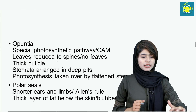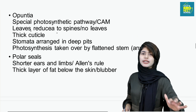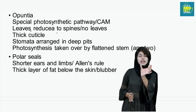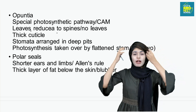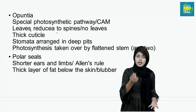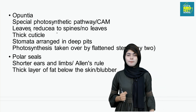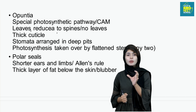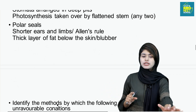For desert plants like opuntia: they have a special photosynthetic pathway — the CAM pathway. Leaves are reduced to spines, they have very thick cuticles, and photosynthesis is taken over by the flattened stem.